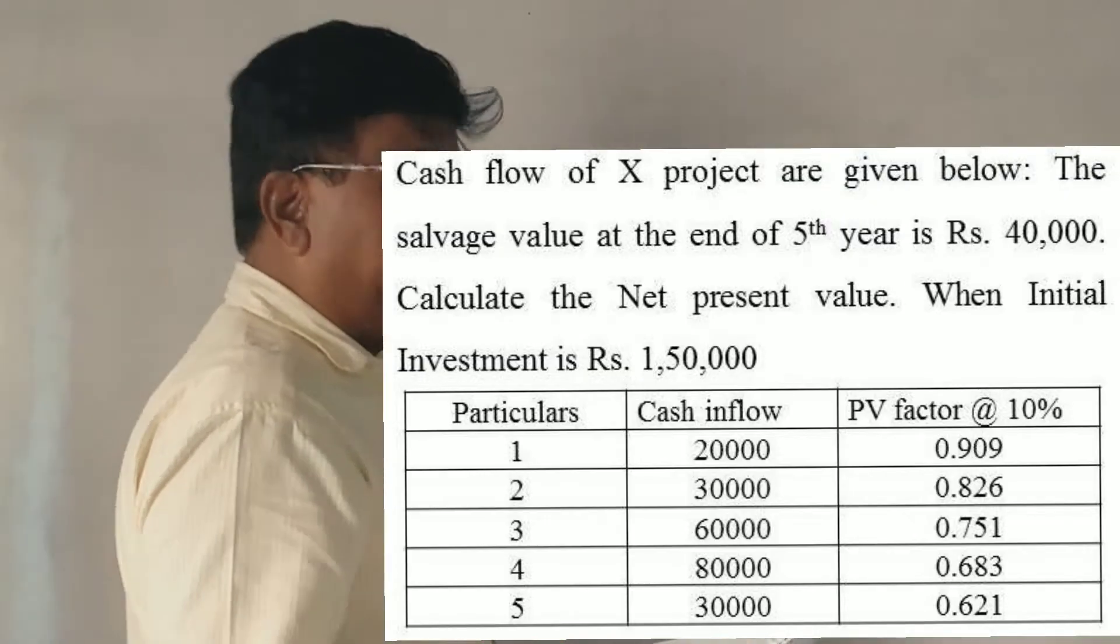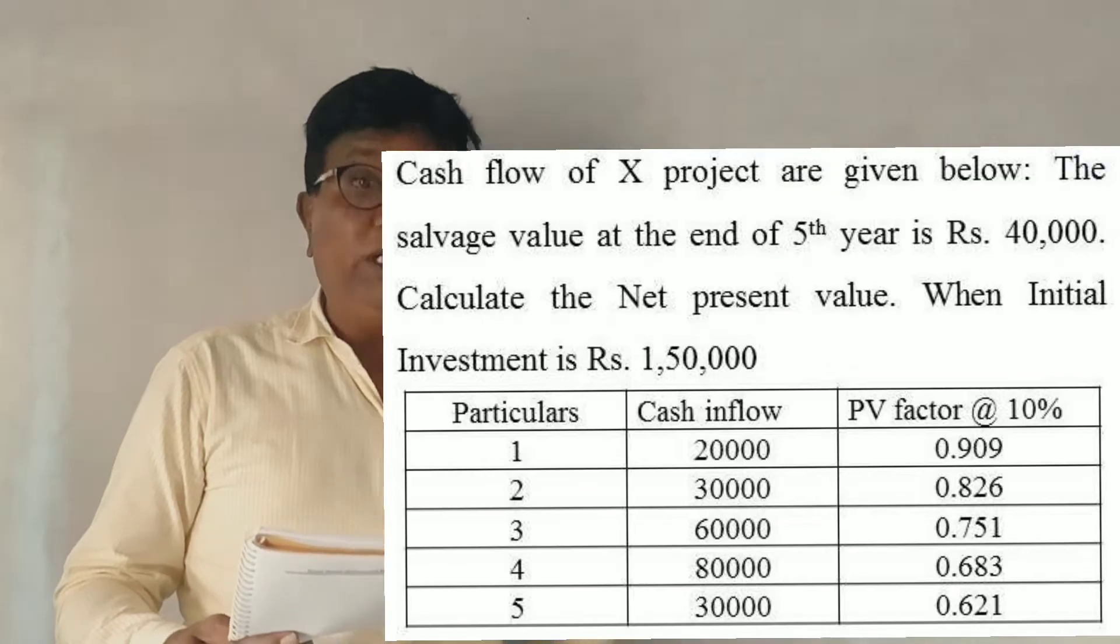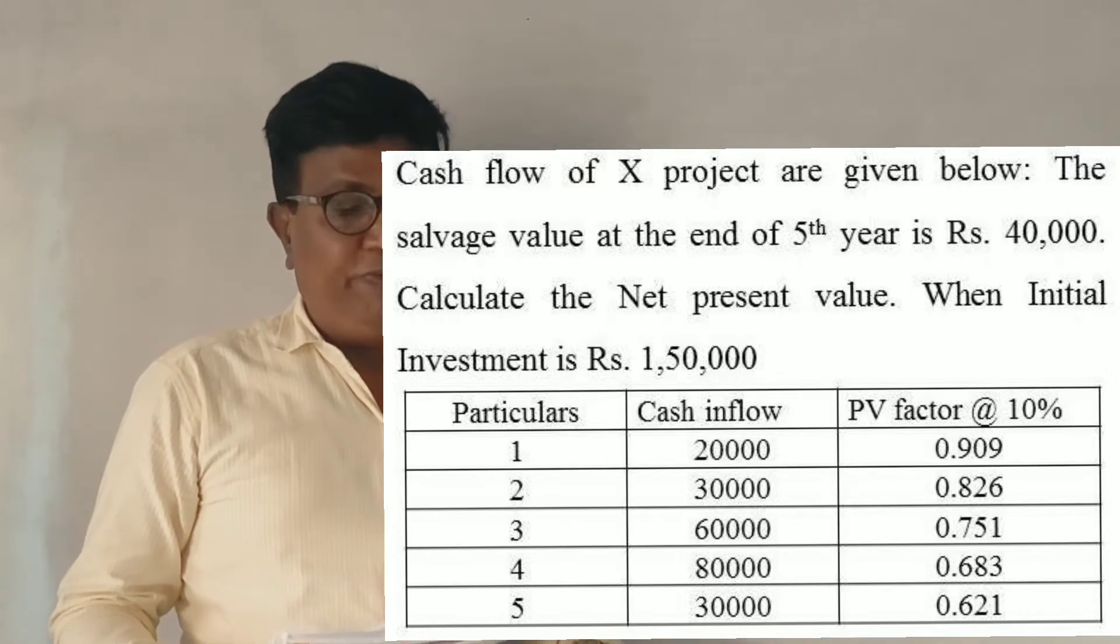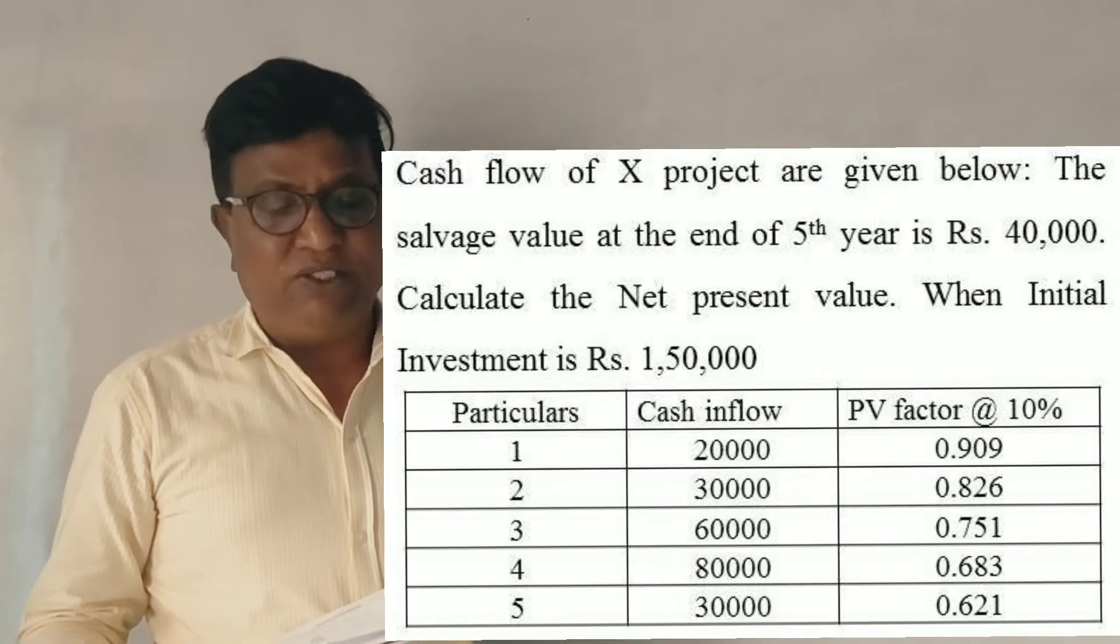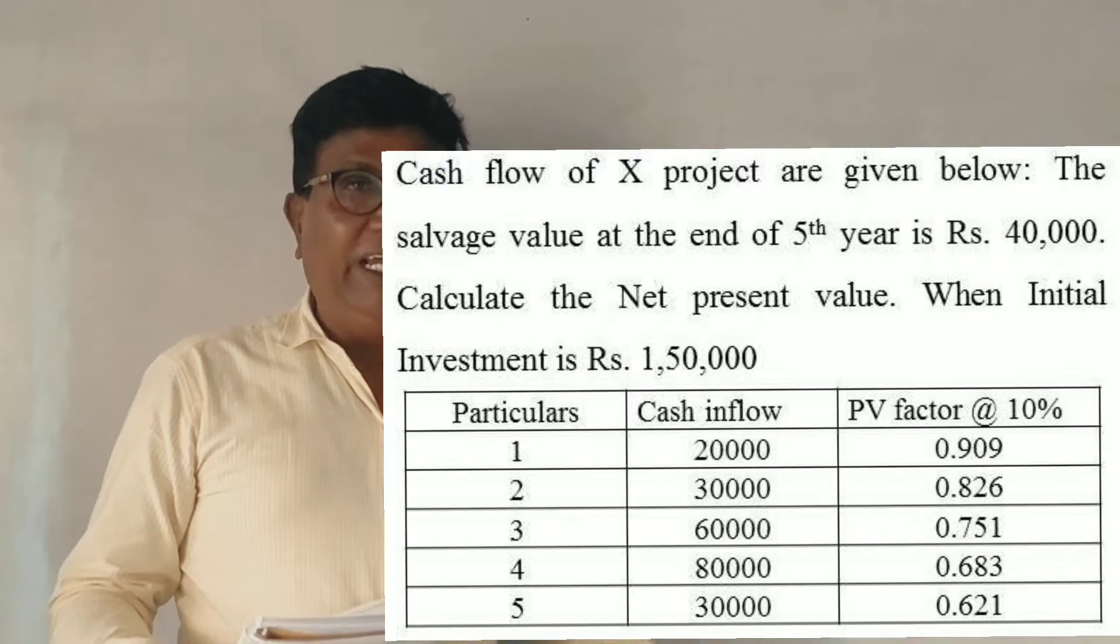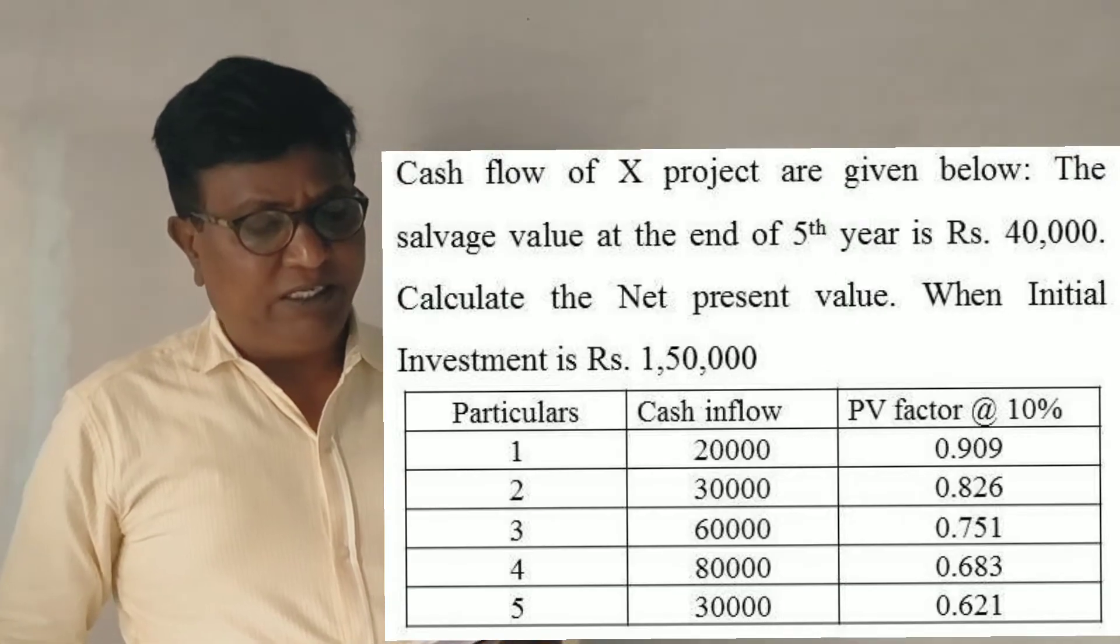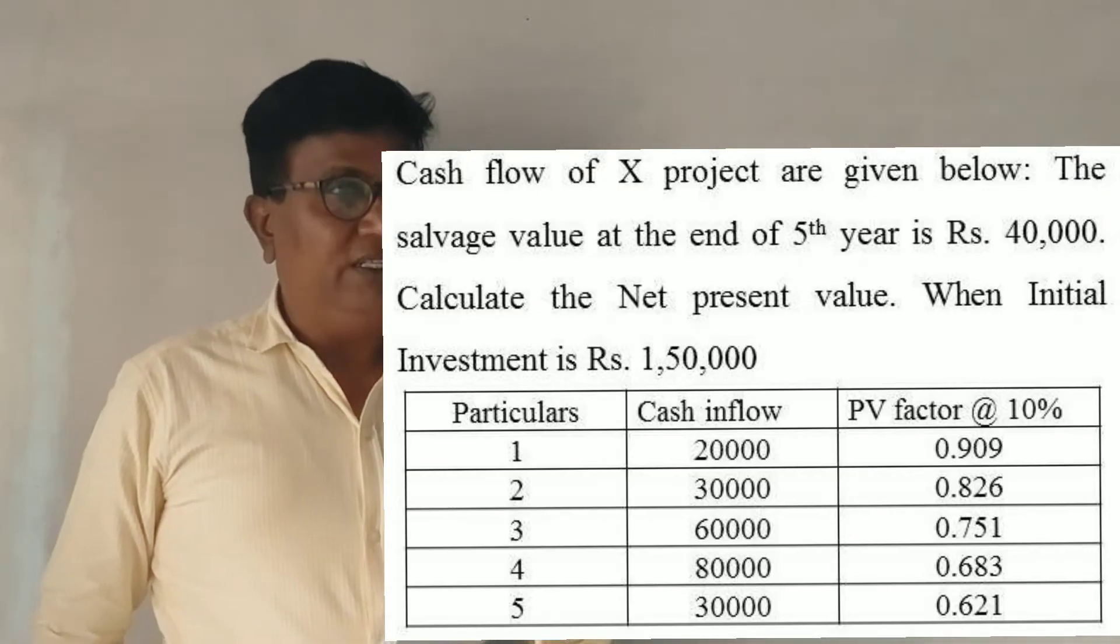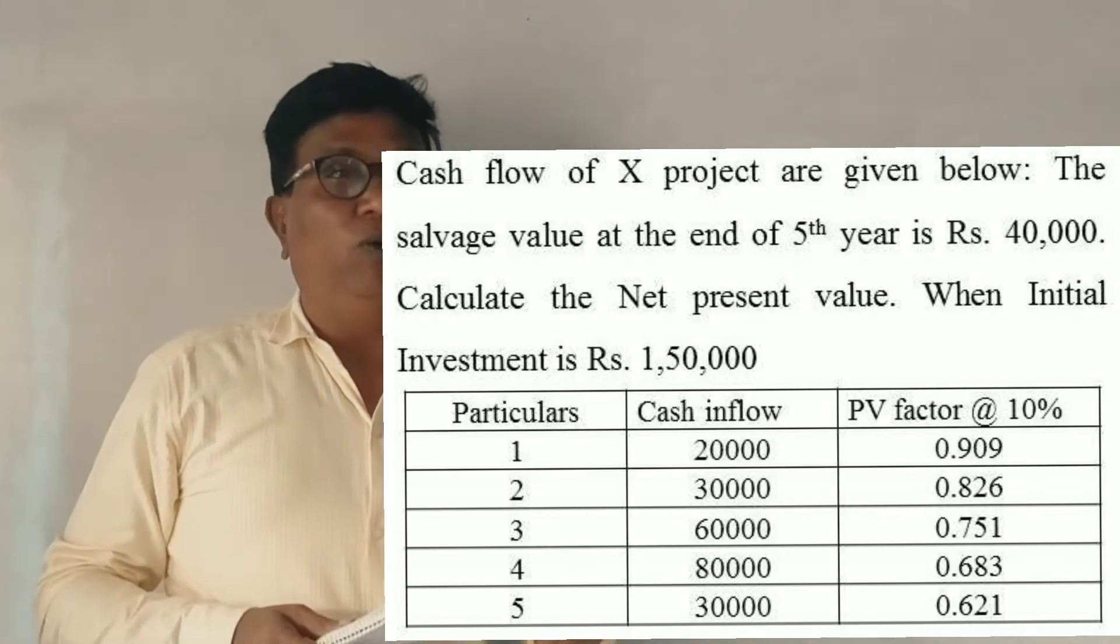Financial Management. The net present value in 2017 is a very easy question. Cash flow of X project are given, the salvage value at the end of the fifth year is 40,000. Calculate net present value if the initial investment is Rs. 1,50,000.